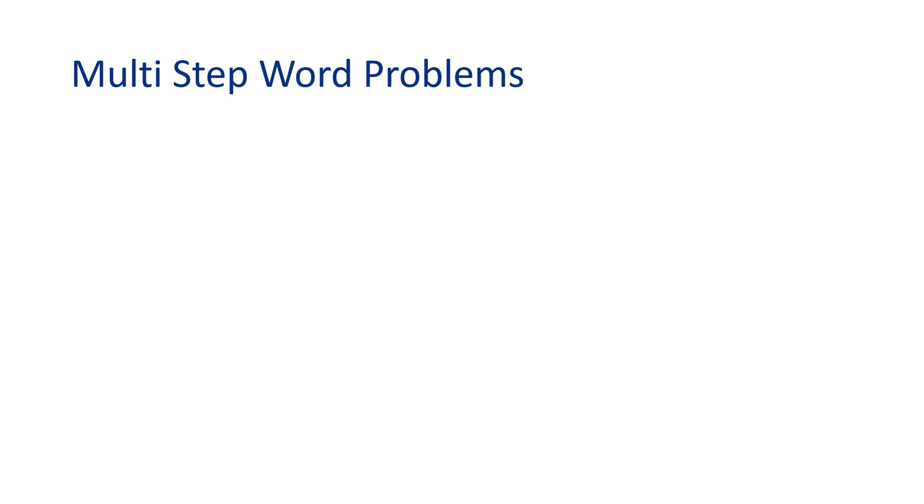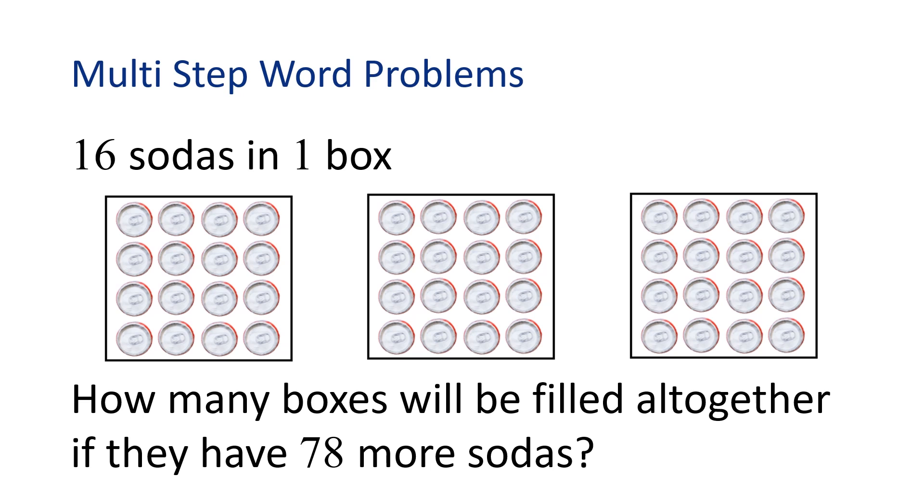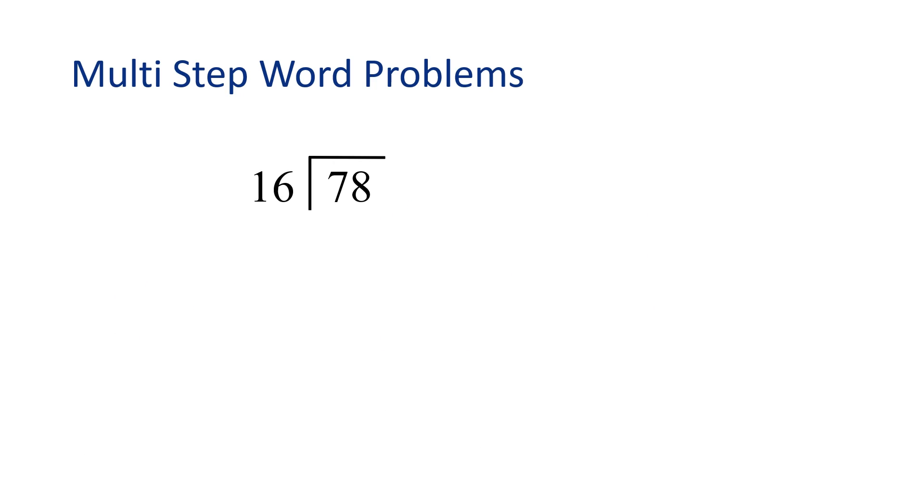Let's look at another problem. A soda factory can put 16 sodas in one box. They have already filled 3 boxes. How many boxes will be filled all together if they have 78 more sodas? First of all, that's a lot of soda. If 16 sodas can fit into one box, we will divide 78 by 16 to find how many boxes are needed for those sodas. Notice the setup for our division problem using the long division sign. 78 is the dividend and it goes under the long division sign, where 16 is the divisor, so it goes outside and to the left. We need to figure out how many times 16 goes into 78. Let's try 4.